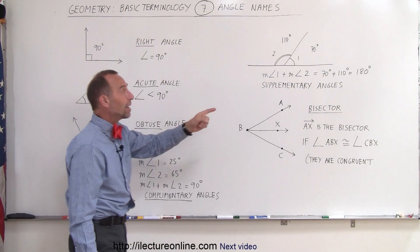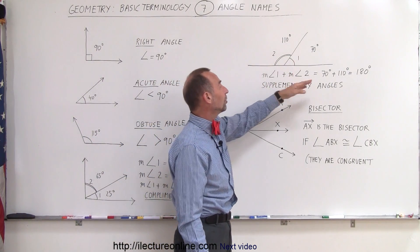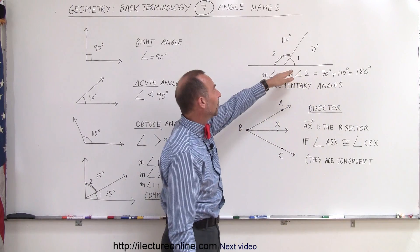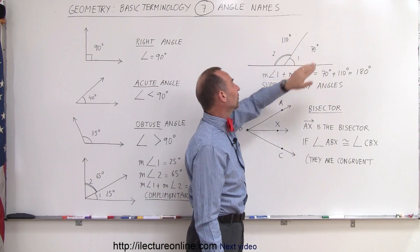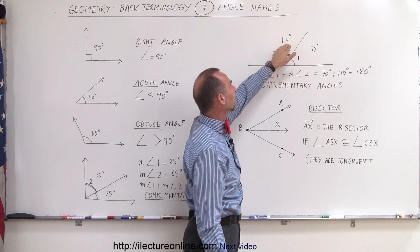Sometimes we have a situation where we have two angles, and together they add up to 180 degrees. So here we have angle 1 with a measure of 70 degrees. Angle 2 with a measure of 110 degrees.